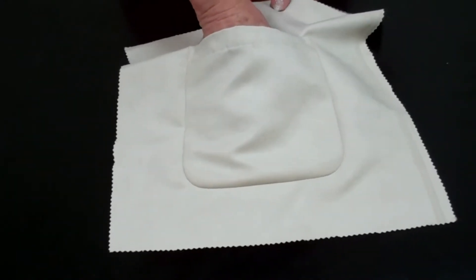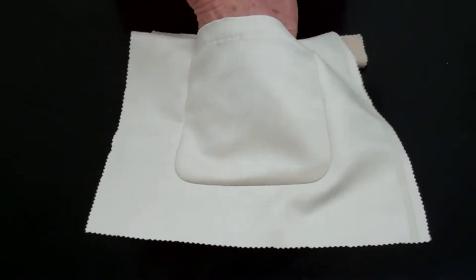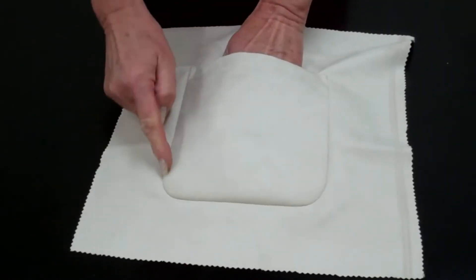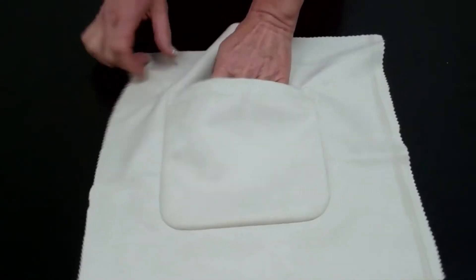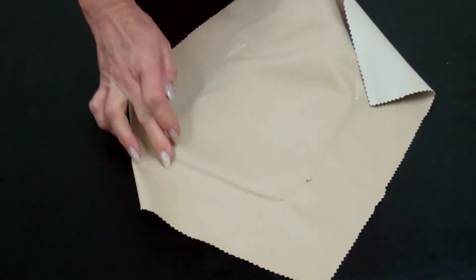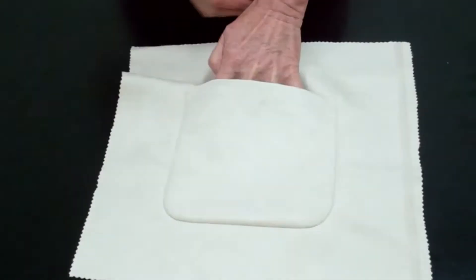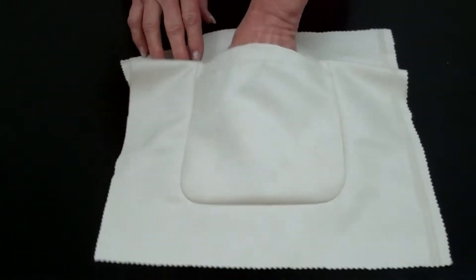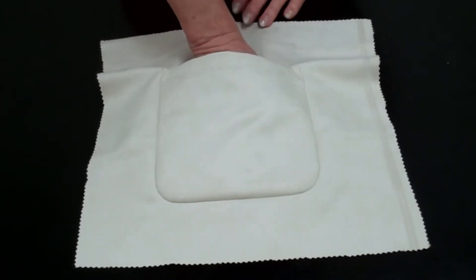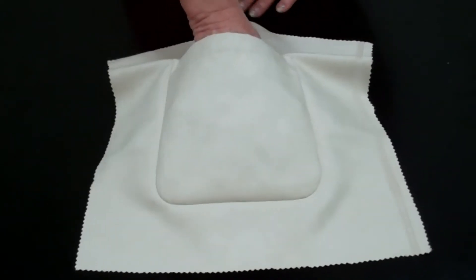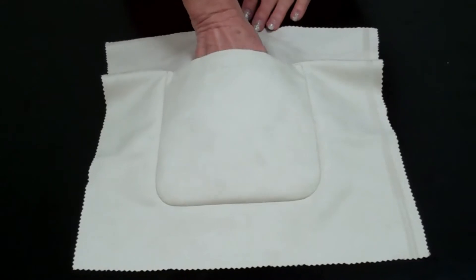This is a blind stitched on pocket. Blind for the reason that you do not see any seam anywhere on the outside. On the inside, yes of course you do have a seam there, but not on the outside. So this is a very elegant way of making a pocket and I show you now how you can do this just as well.